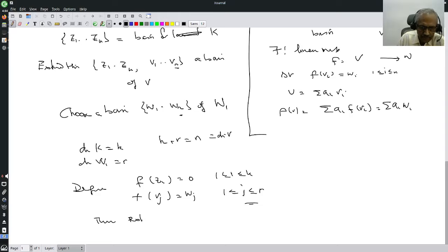Then, extend F to a linear map. So you start with any V in V, then V I can write as summation Ai Zi, i equals 1 to k, plus Bj Vj, j equals 1 to r...